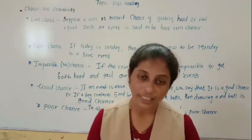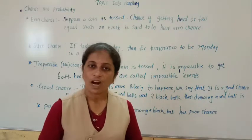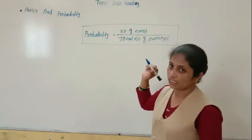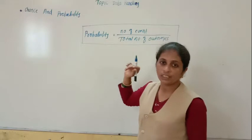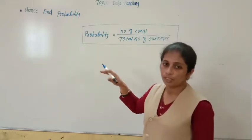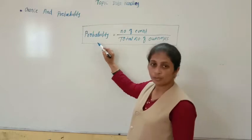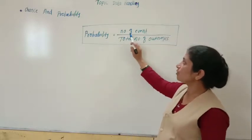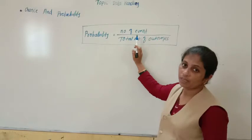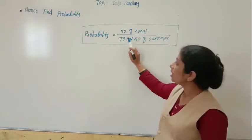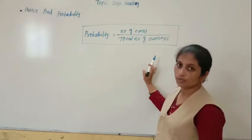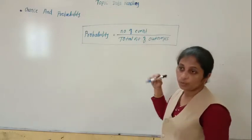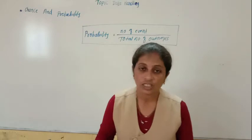Now we will see examples related to chance and probability and how to find probability using the formula. The formula for probability is: probability equals the number of events divided by the total number of outcomes. This gives us how many times the event occurs out of the total possible outcomes.